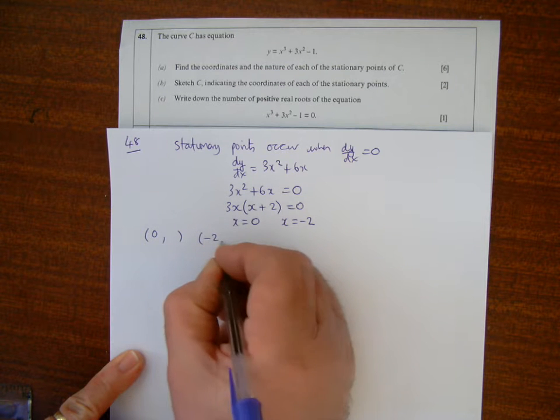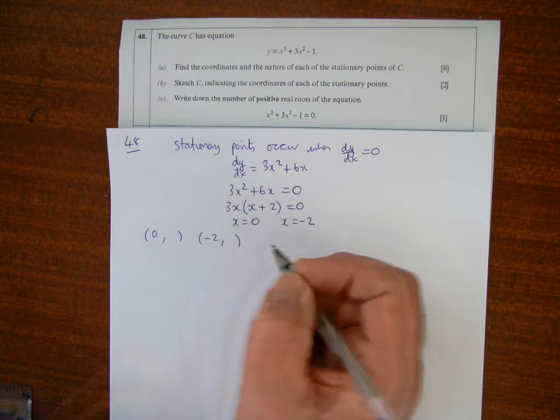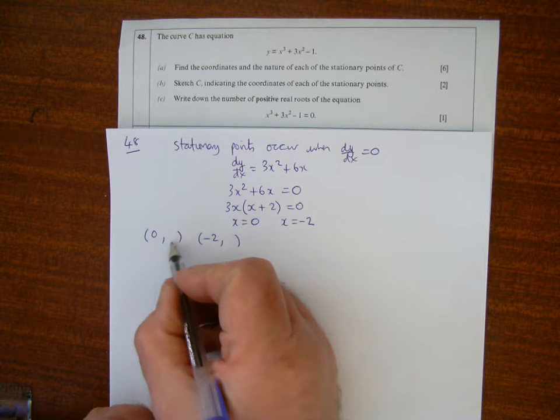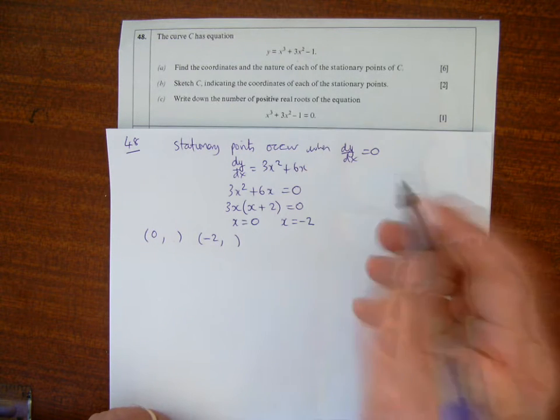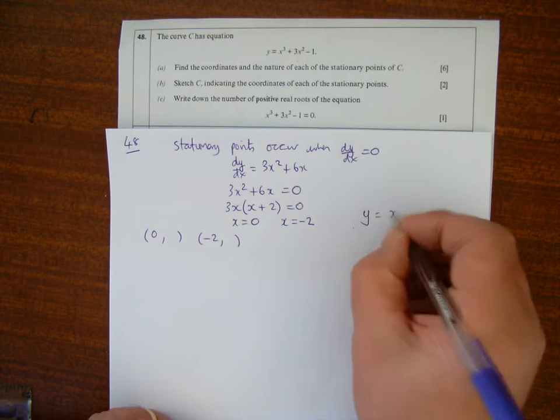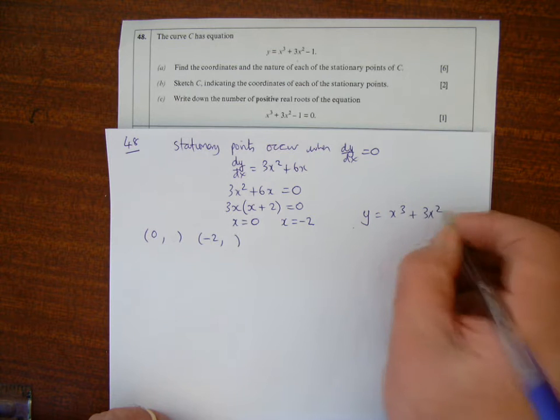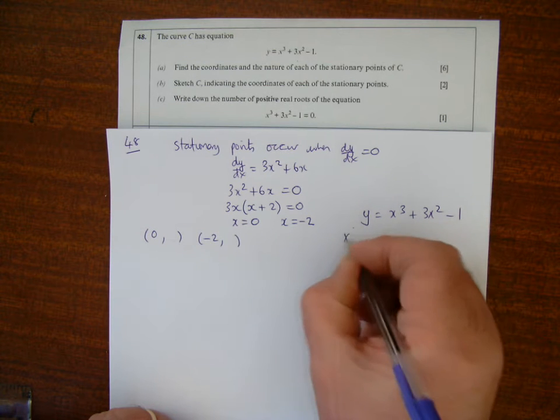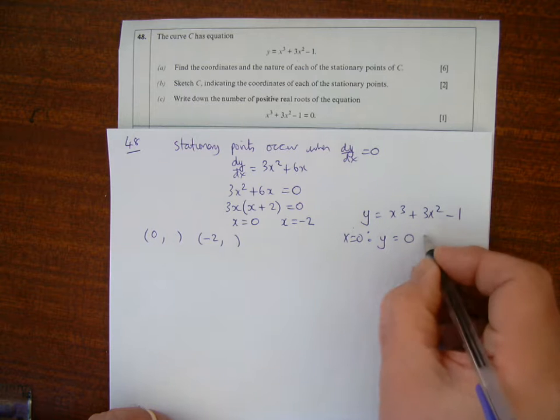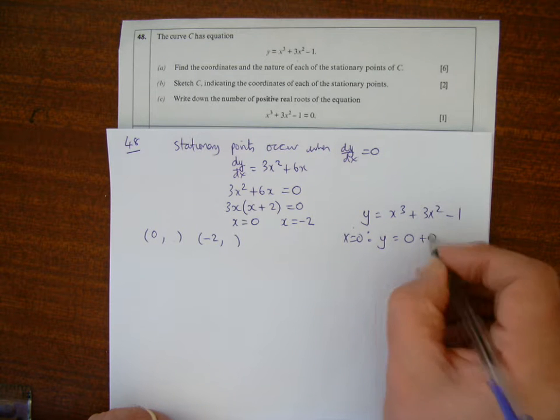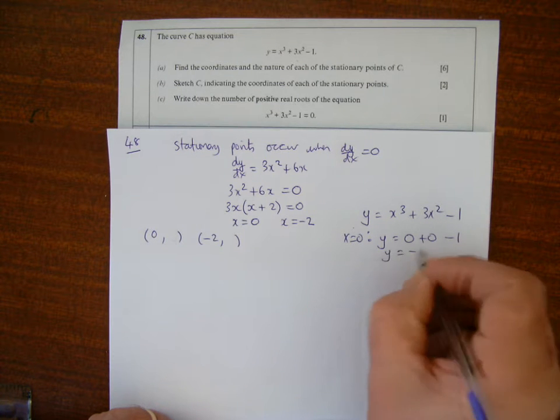To find the corresponding y values, I go back to the equation y = x³ + 3x² - 1. If x = 0, then y = 0³ + 3(0)² - 1 = -1.